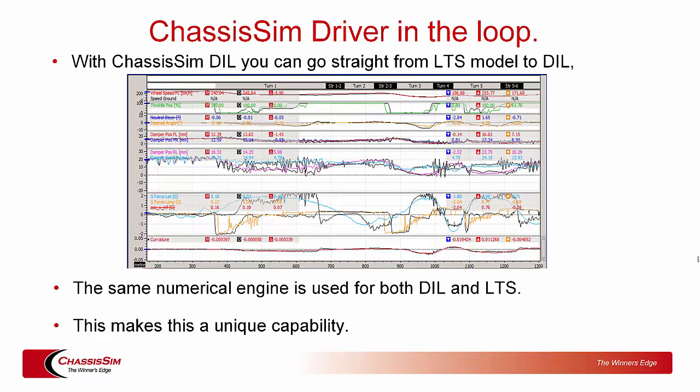A quick introduction to ChassisSim Driver in the Loop: what it brings to the party is the ability to go straight from the lap time simulation model to the driver in the loop model. ChassisSim can do this because at its fundamental core is a full transient 21-state multi-body MBD vehicle dynamics model. One of the things that makes ChassisSim unique is that lap time simulation is transient, so the step to go from lap time simulation to driver in the loop is simply a matter of ripping out the autonomous control inputs and putting in manual inputs.